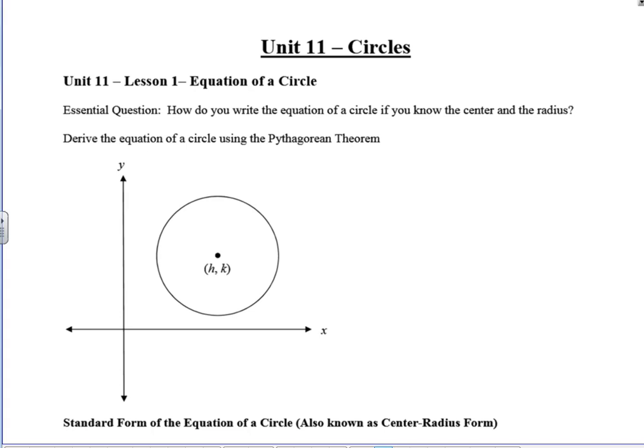So the question that we're going to answer today is how do we write the equation of a circle if we know the center and the radius? And we're going to do that by using the Pythagorean theorem to derive this equation. We often represent the Pythagorean theorem with a squared plus b squared equals c squared. What kind of triangle do we have to have in order to use the Pythagorean theorem? Right triangle. Okay, that's correct.